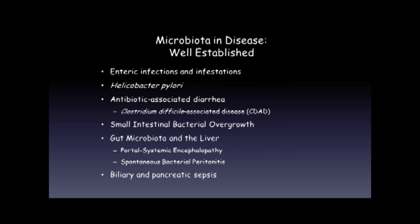For us as clinicians, our main interest is what is the role of the microbiota in disease. There are several examples from gastrointestinal disease and other diseases where there's a well-established role for the microbiota. Obviously, in enteric infections and infestations — an absolutely fascinating example is Helicobacter pylori, which illustrates the complex relationships that can occur between a bacterium and the host. Antibiotic-associated diarrhea illustrates what happens when we disrupt the normal microbiome. Small intestinal bacterial overgrowth, portal systemic encephalopathy, spontaneous bacterial peritonitis, and biliary and pancreatic sepsis also involve gut-derived organisms.